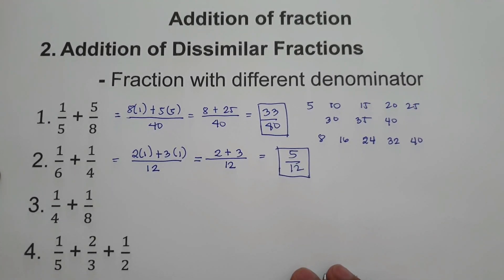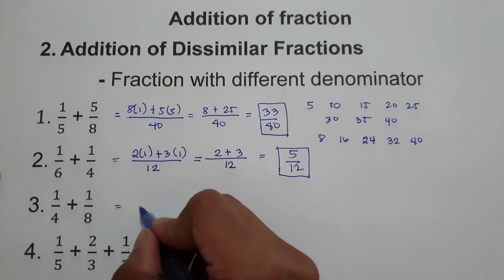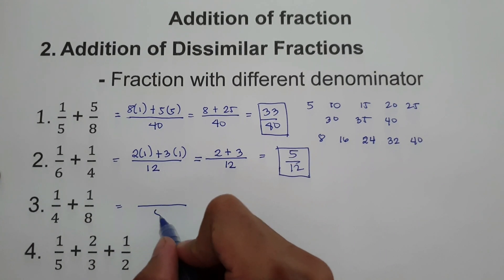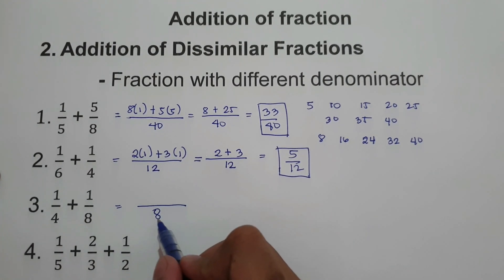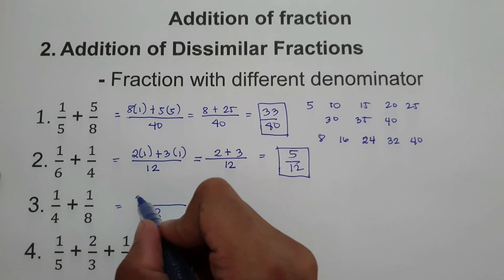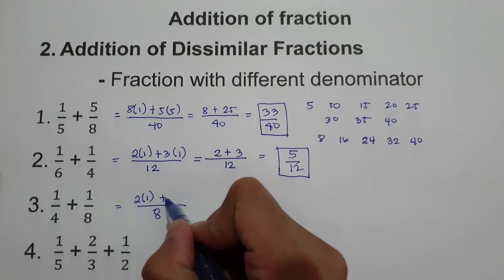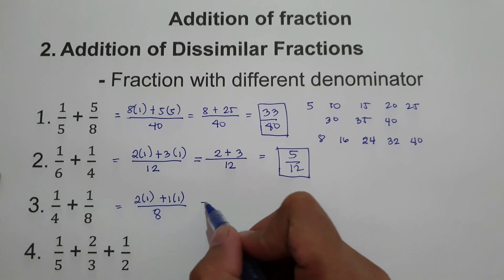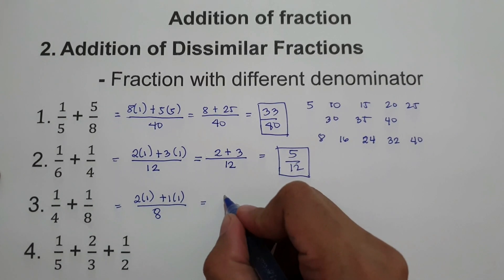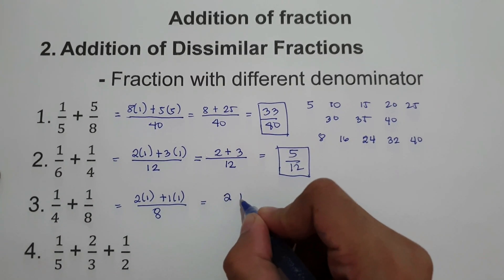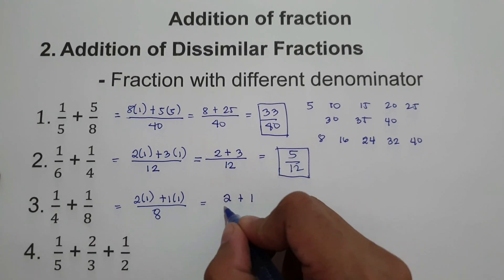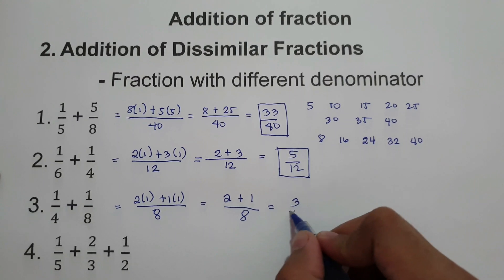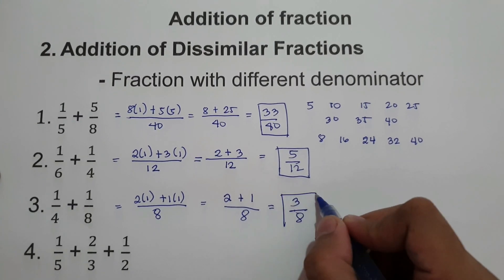Number 3: 1 fourth plus 1 over 8. The least common multiple of 4 and 8 is 8. 8 divided by 4 is 2, times 1; plus 8 divided by 8 is 1, multiplied by 1. Simplifying the numerator: 2 multiplied by 1 is 2, plus 1 multiplied by 1 is 1, over 8. That gives us 3 over 8. So this will be our final answer.